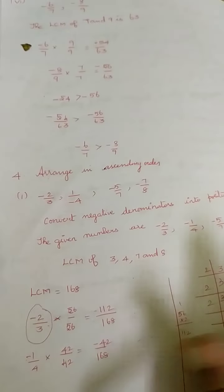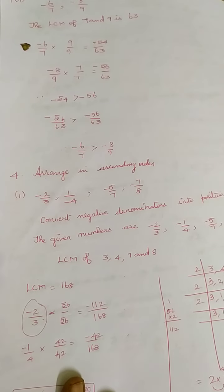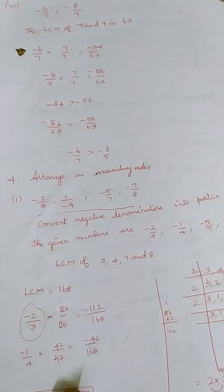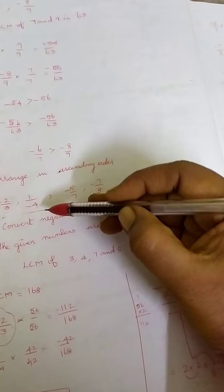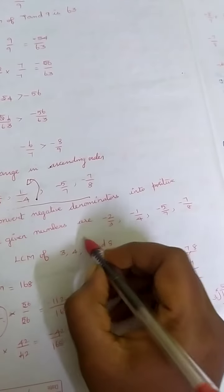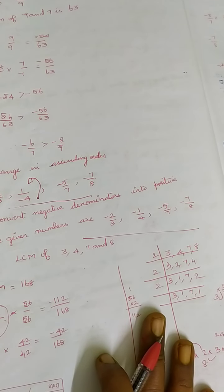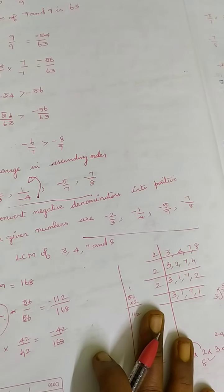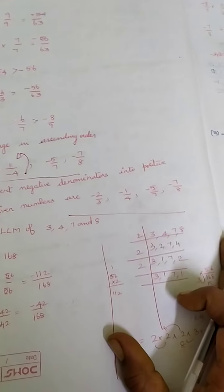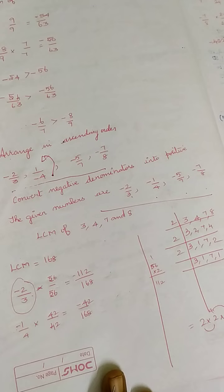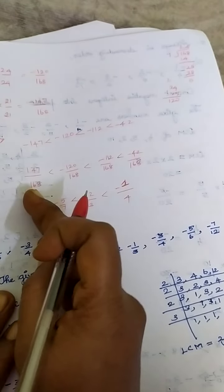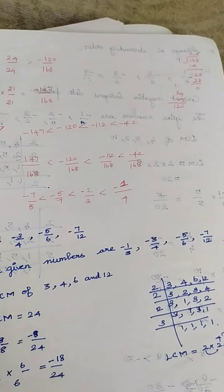For example, if you have rational numbers and need to arrange them in ascending or descending order, first look at the denominators. If the denominators are different and there are negative symbols, move the negative sign to the numerator to make the denominator positive. Then find the LCM of all denominators — for example, LCM of 3, 4, 7, and 8 is 24. Make all denominators equal to 24 by multiplying both numerator and denominator by the appropriate number. Then compare the numerators and arrange from smaller to bigger for ascending order.